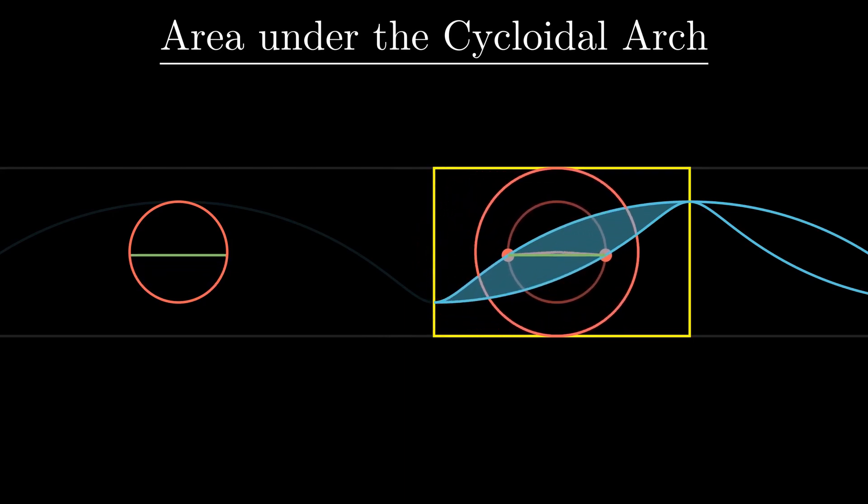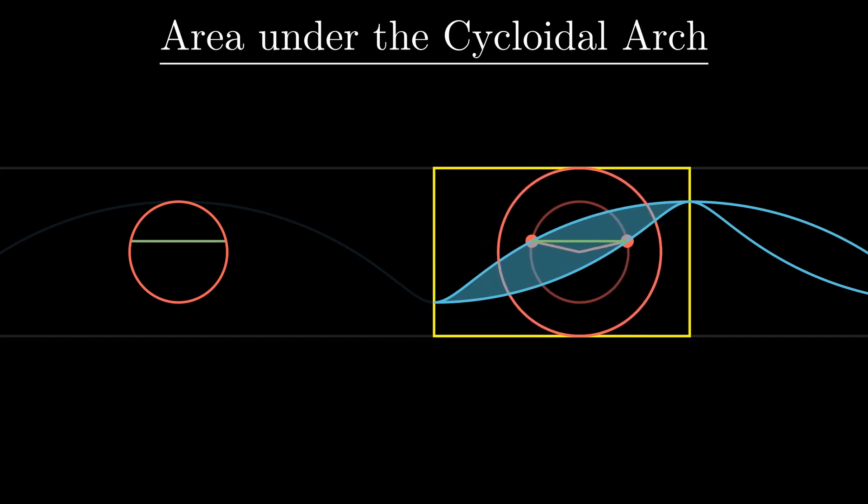Therefore, the tracing points on either of the cycloids will be at the same height. We can also observe that the line joining these two tracing points is a chord on the smaller circle.